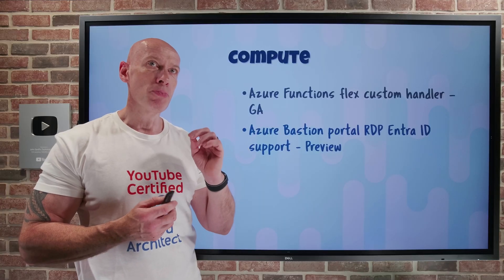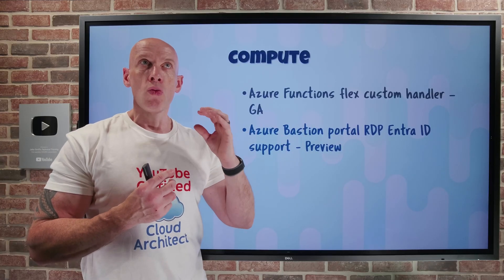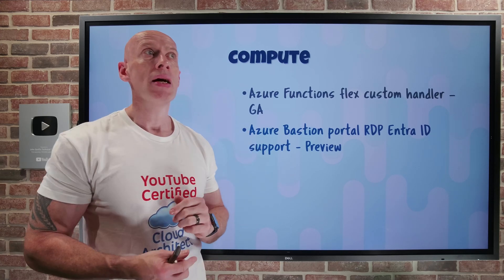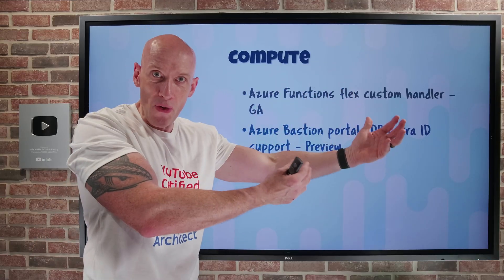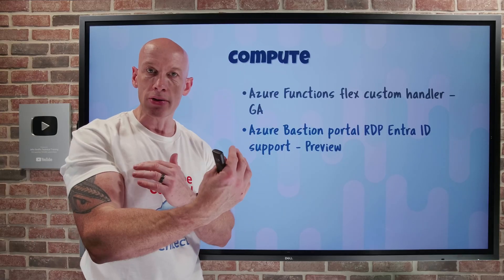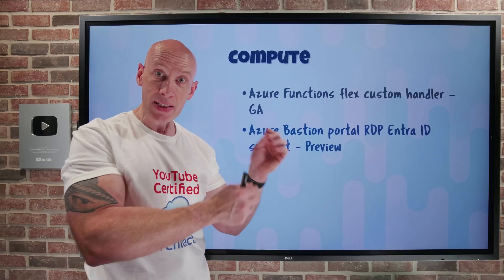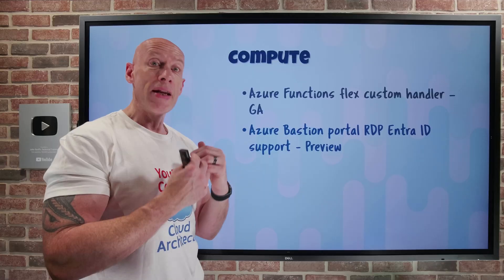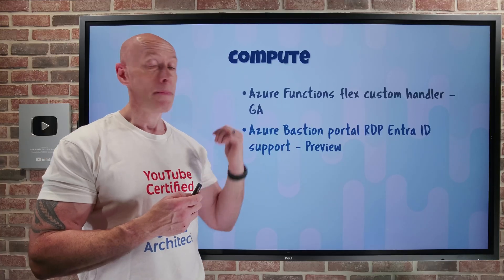Azure Bastion now supports a browser-based EntraID-integrated RDP connection. If authenticating from the native client, I could already use EntraID-integrated authentication for both SSH and RDP. From the portal — from a browser — I could use SSH only. With this update, I can now use RDP as well via the browser. The great thing about EntraID integrated authentication is it gives a better security stance compared to local authentication and a much more seamless user experience. You will need the AAD Login for Windows extension enabled in the VM, and either the Virtual Machine User Login or Virtual Machine Administrator Login role. But now I can use EntraID integrated authentication when RDPing into a Bastion-enabled target via the browser.